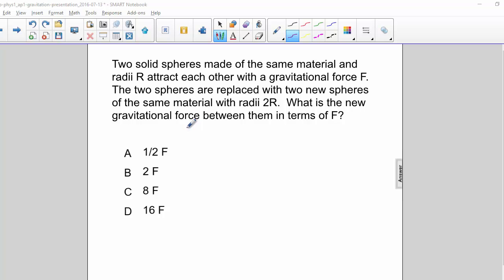Two solid spheres made of the same material and radii R attract each other with a gravitational force F. The two spheres are replaced with two new spheres of the same material with radii 2R.